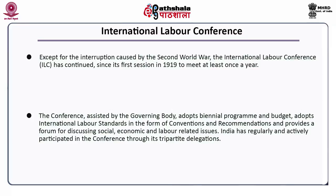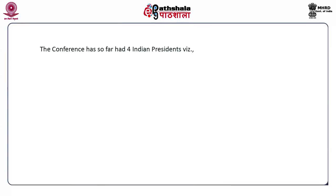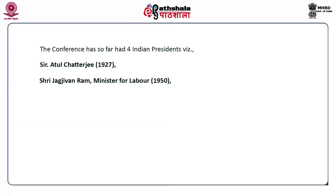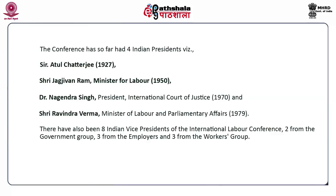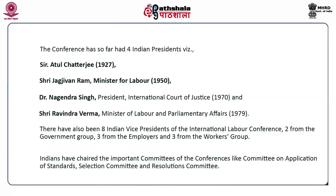India has regularly and actively participated in the conference through its tripartite delegations. The conference has so far had four Indian presidents: Sir Atul Chatterjee in 1937, Shri Jagjivan Ram, Ministry of Labour 1950, Dr. Nagendra Singh, President International Court of Justice 1970, and lastly Shri Ravinder Verma, Minister of Labour and Parliamentary Affairs 1979. There have also been eight Indian vice presidents — two from the government group, three from the employers and three from the workers group. Indians have chaired important committees of the conference like Committee on Application of Standards, Selection Committee and Resolution Committee.